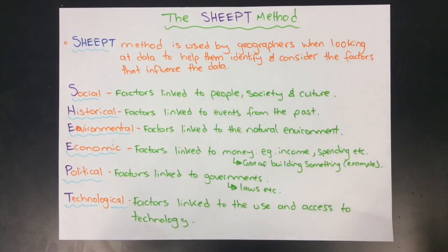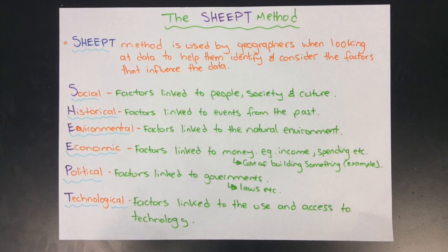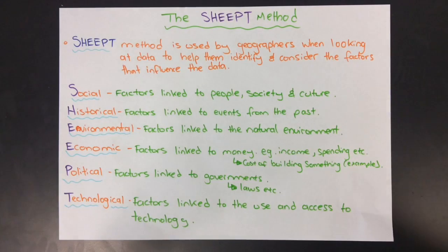Economic factors such as money, income, spending — or for example something like the cost of a building — and how that might influence the data. P for political factors that are linked to the government, so laws and regulations. And T for technological — factors linked to the use and access of technology.